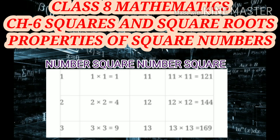For example, as you can see in this table, the square of 1 is 1, square of 2 is 4 and square of 3 is 9. The unit digit of the squares are 1, 4 and 9. Similarly, if we look at the squares of 11, it is 121, square of 12 is 144 and square of 13 is 169. The square of these numbers also end in 1, 4 and 9. That is the unit digit of the squares of these numbers is 1, 4 and 9.